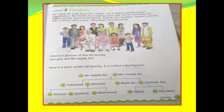Now look at this paragraph. Mr. Habib Ali is Mr. Raza Ali's father. Now look at this family tree. This one is Mr. Habib Ali and Mrs. Habib Ali. Mr. Habib Ali is the grandfather and Mrs. Habib Ali is the grandmother. Mr. Habib Ali and Mrs. Habib Ali have two kids: one daughter, Tahmina, and one son, Raza Ali. Imran is the husband of Tahmina, and Zainab Ali is the wife of Raza Ali.